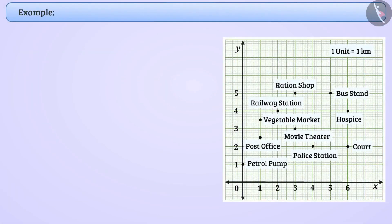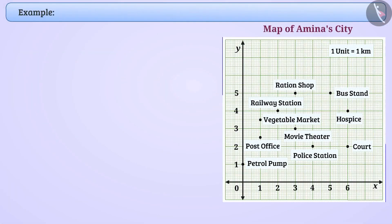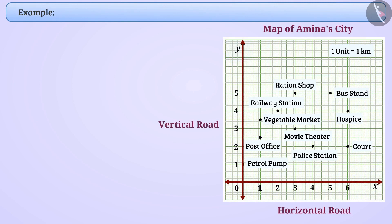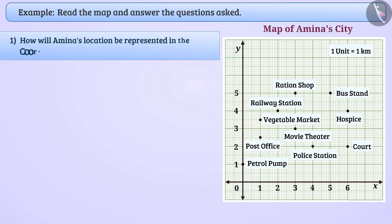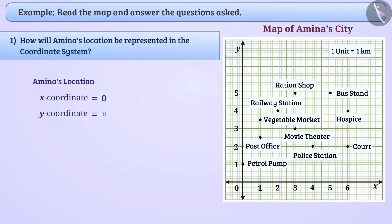Below is the map of Amina's city. The x-axis represents the horizontal road and the y-axis represents the vertical road, and Amina stands at the intersection. Amina's location can be represented by x-coordinate 0 and y-coordinate 0, so her location will be (0, 0). We can call it the origin.